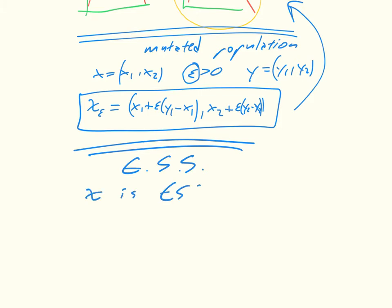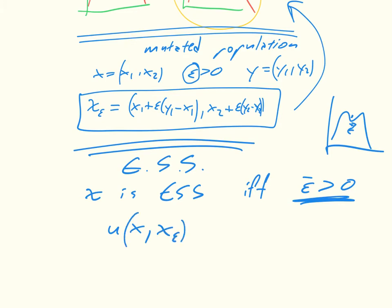x is ESS, is evolutionary stable, if and only if there exists some epsilon bar greater than zero, so there is some nudge, and this goes back to that idea of the marble, that I can move it a small enough amount such that it comes back, of course if I move it a lot it'll not come back, but if I move it a small enough amount it'll come back, so this is the small enough amount, such that the utility of x in the population x epsilon is bigger than the utility of y in the population x epsilon, for all epsilon less than epsilon bar, and for all y.